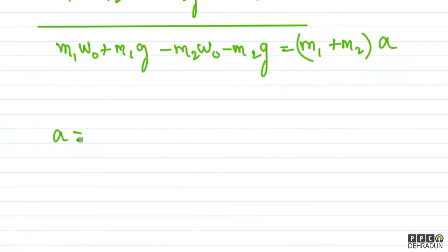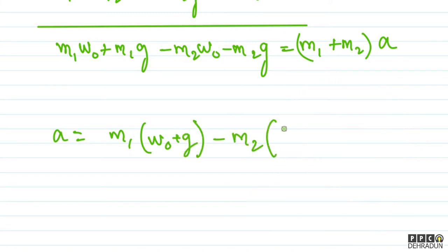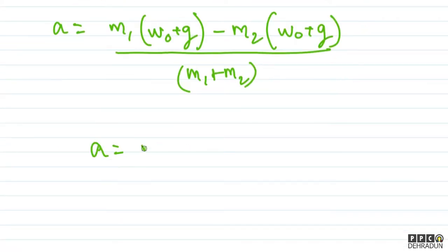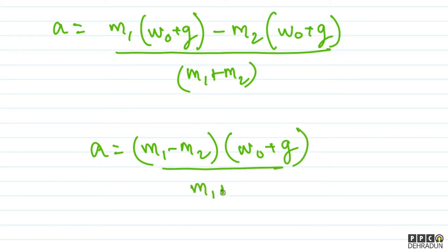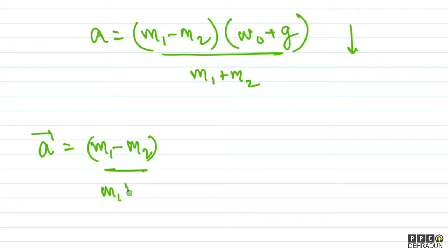From this, the acceleration magnitude is: a = [m1·(w0 + g) − m2·(w0 + g)] / (m1 + m2). We can see that acceleration comes out to be (m1 − m2)·(w0 + g) / (m1 + m2). The direction I have taken is the downward direction.